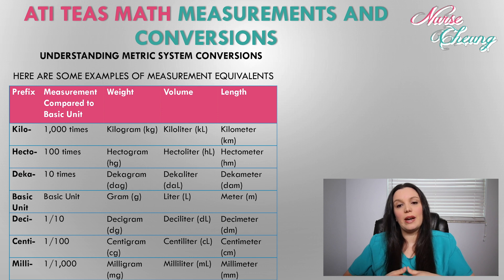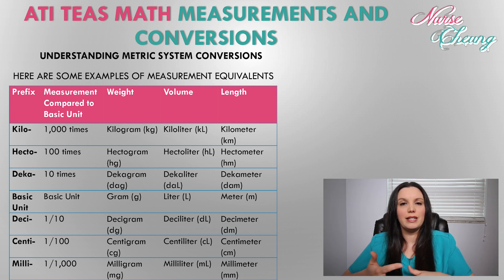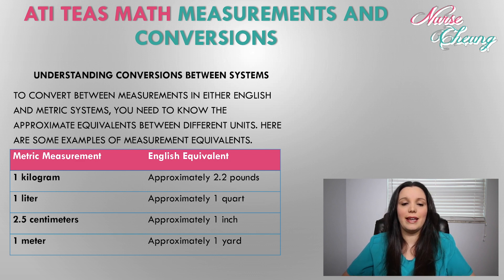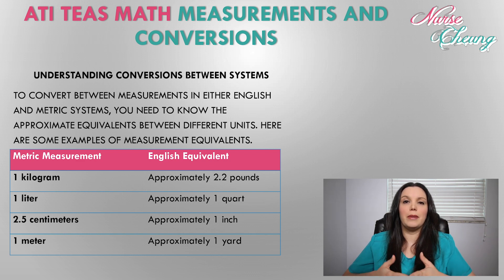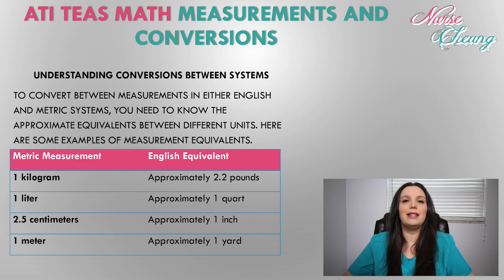If you haven't already, check out my previous video on how to understand and measure the metric system — there's a link in the corner. In order to convert between measurements in either the English or metric system, you need to know the approximate equivalents. One kilogram equals approximately 2.2 pounds, one liter equals approximately one quart, 2.5 centimeters equals approximately one inch, and one meter equals approximately one yard.